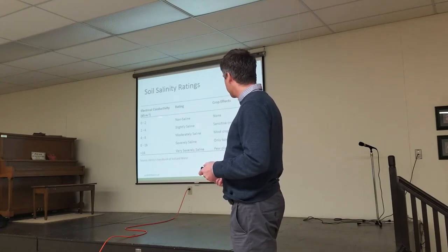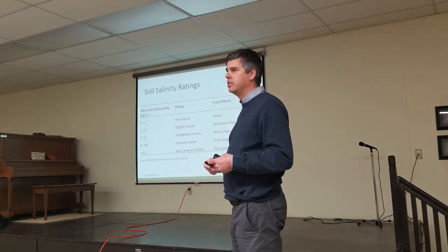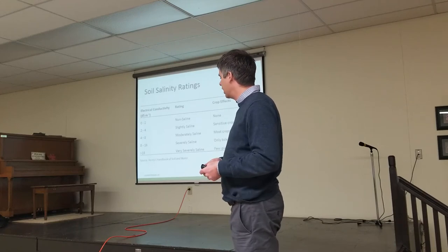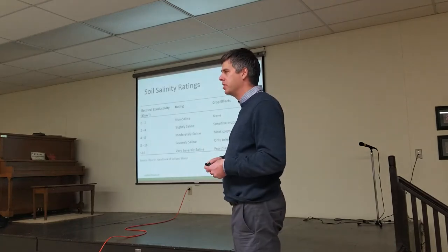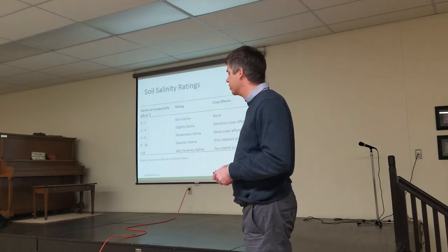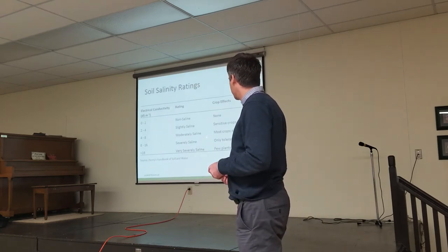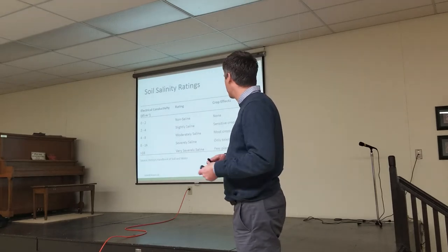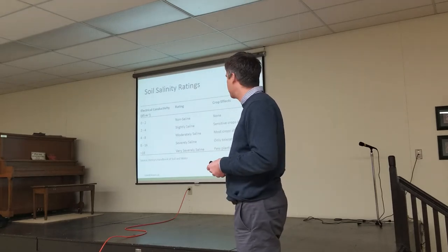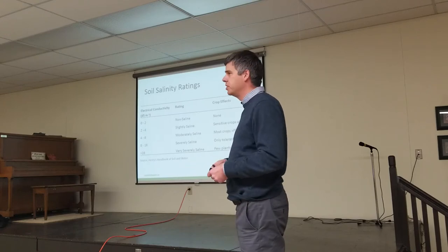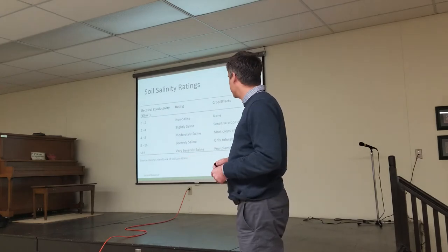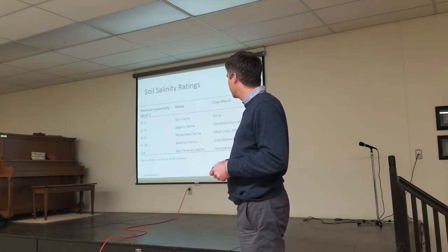With measuring salinity, the different ratings we have: 0 to 2 deci-Siemens per meter is non-saline; 2 to 4 is slightly saline, where you might see yields start to decrease in dry years, but generally not a concern. 4 to 8 is moderately saline — there's reduced crop productivity with most crops in these areas, particularly in dry years you might start to see reduced emergence and lower stand counts, so your yield potential right off the get-go is lower.